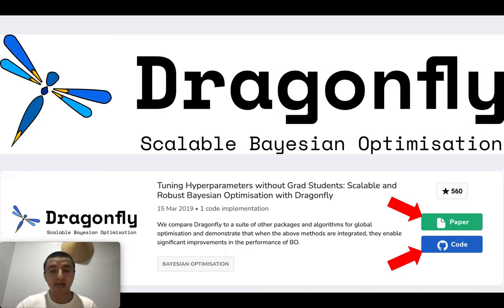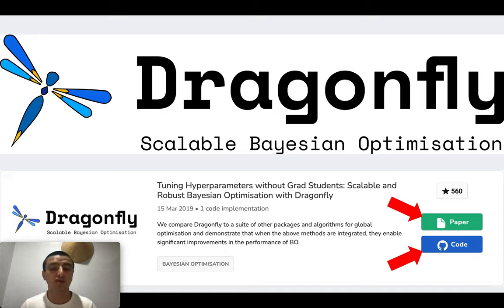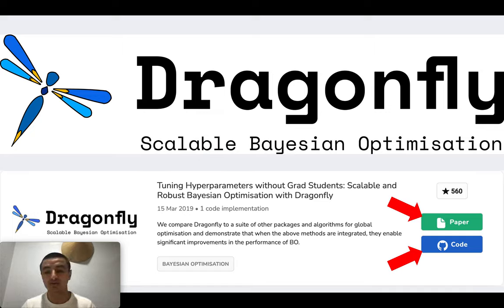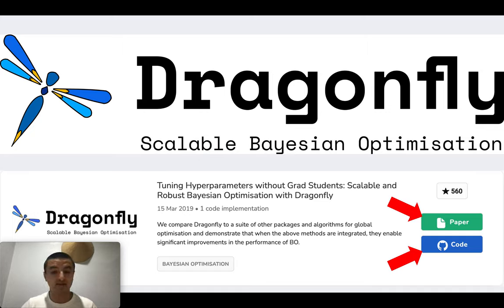Right now I'm at the point of reading about dragonfly algorithms and understanding them. My advisor also asked me to find the code on GitHub. Since it's a newer algorithm, its code is in Python, and I feel more comfortable working with Python. I was happy to find the code on GitHub. There's a website I really like called Papers with Code, and I also found the code and the paper there. So currently I'm doing two things: reading and understanding dragonfly algorithms, and playing with the dragonfly code.